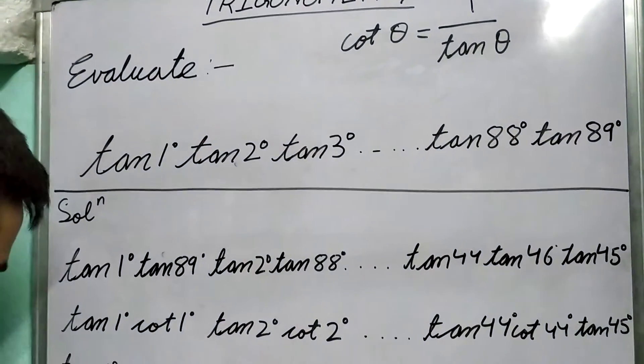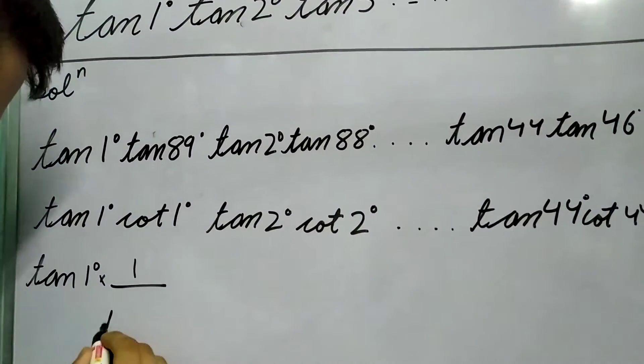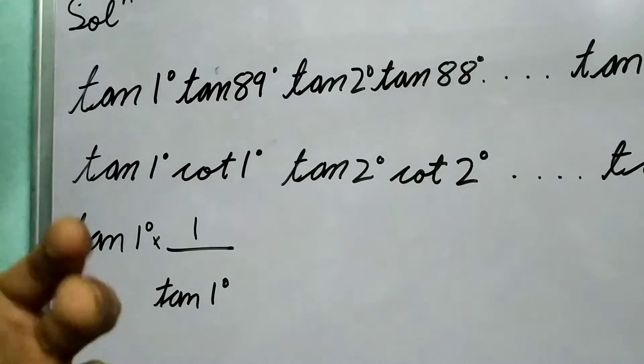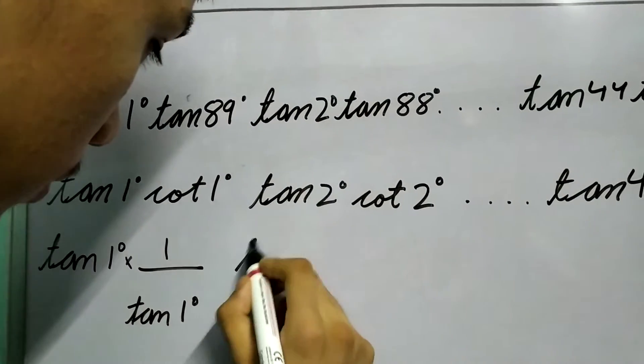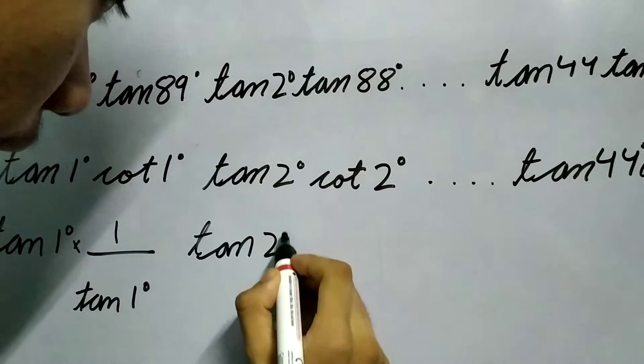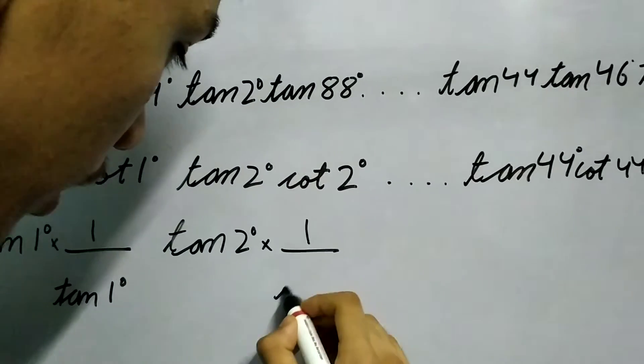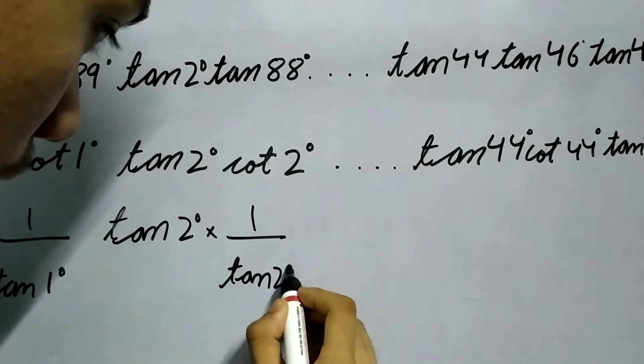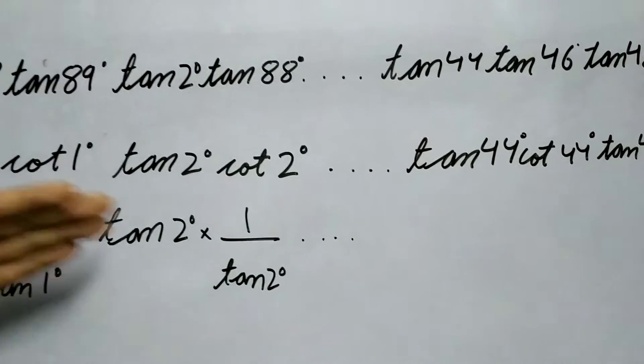So you can write this as tan 1° · (1/tan 1°). I hope you see where this is going. So you can write tan 2° · (1/tan 2°), and so on.